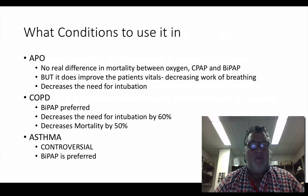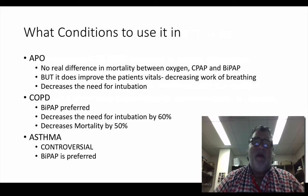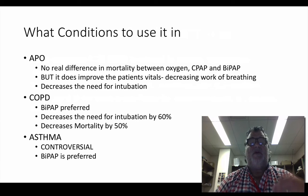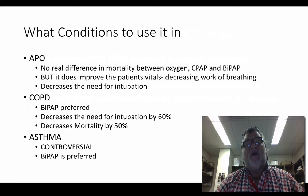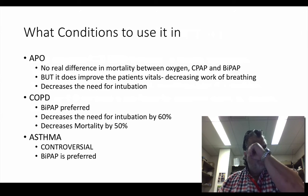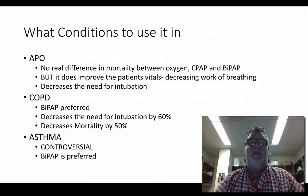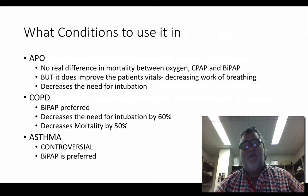It's controversial in asthma, but if we were going to use it, we'd probably use it in its BiPAP form. In APO, in terms of mortality, there's no great difference shown between using oxygen, CPAP, or BiPAP. However, it does decrease the work of breathing and thus improve the vitals of the patient — so their heart rate goes down, their respiratory rate goes down — and it has been shown to decrease the rate of intubation. There may be a slight increase in MIs in these patients, but so do all other modalities.